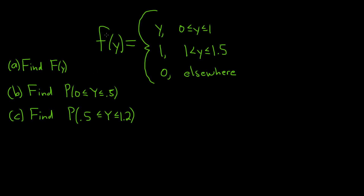In this problem we have a density function f of y, and we have three different questions. Part a is to find the distribution function for f of y, and then part b and c we have to find probabilities, which we can do once we have part a. So let's go ahead and start by doing part a.